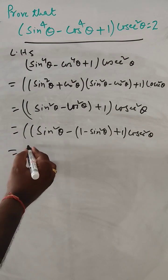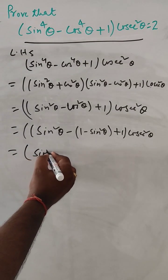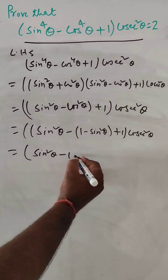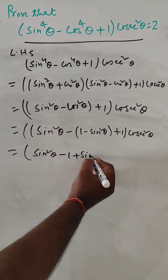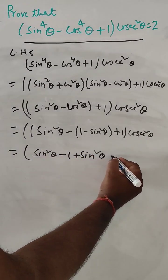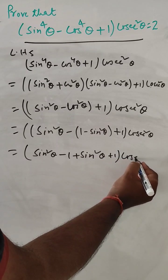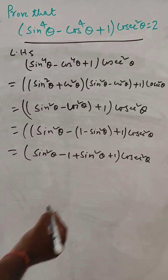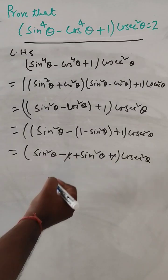So now sin square theta minus 1 plus sin square theta plus 1 here cos square theta. This one, this one get cancelled.